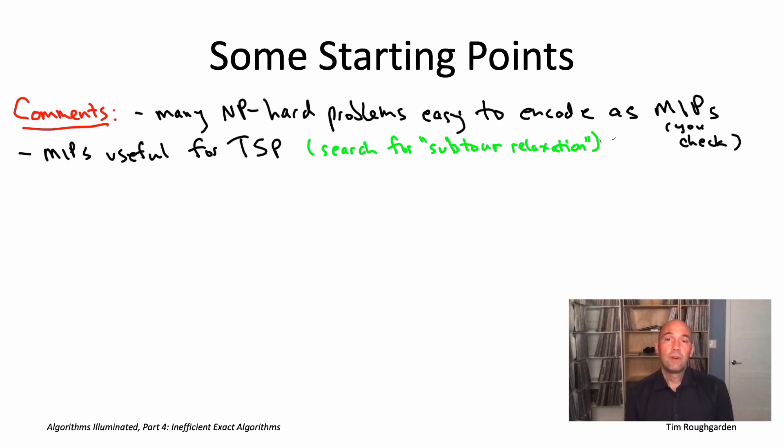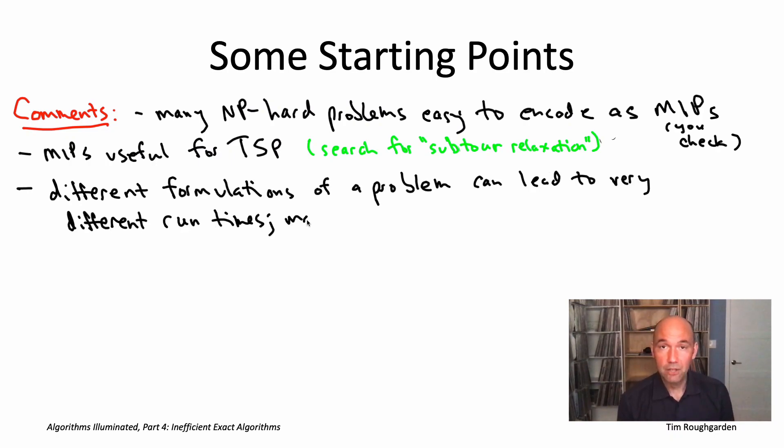That means if your first attempt at tackling a problem using a mixed integer programming solver fails, it doesn't necessarily mean it's the wrong technology. It may just mean you need to experiment with other ways of encoding your problem as a MIP for the solver to have acceptable performance.